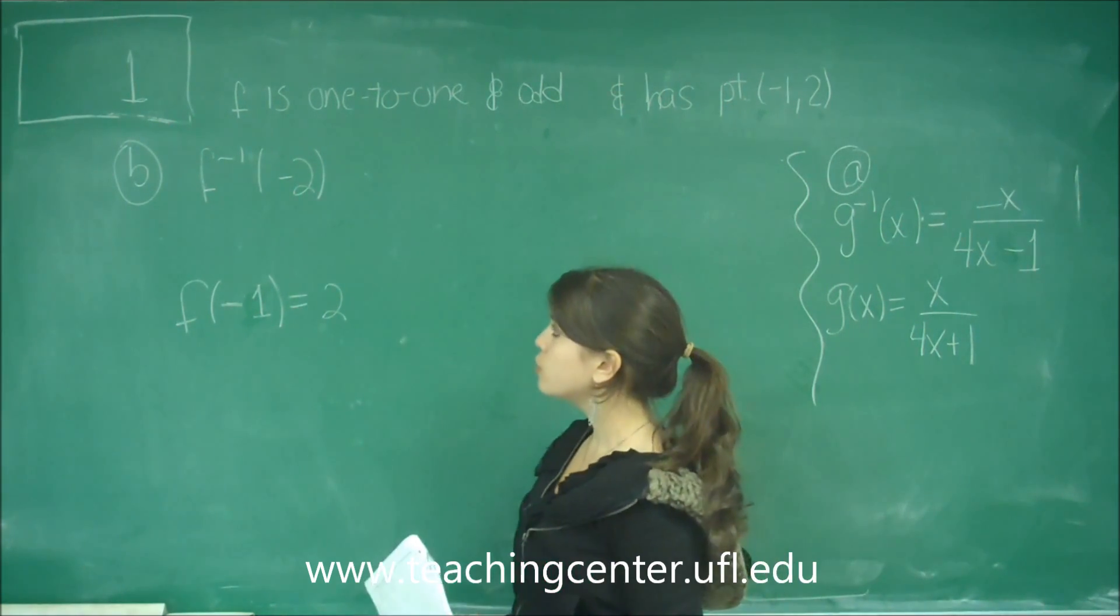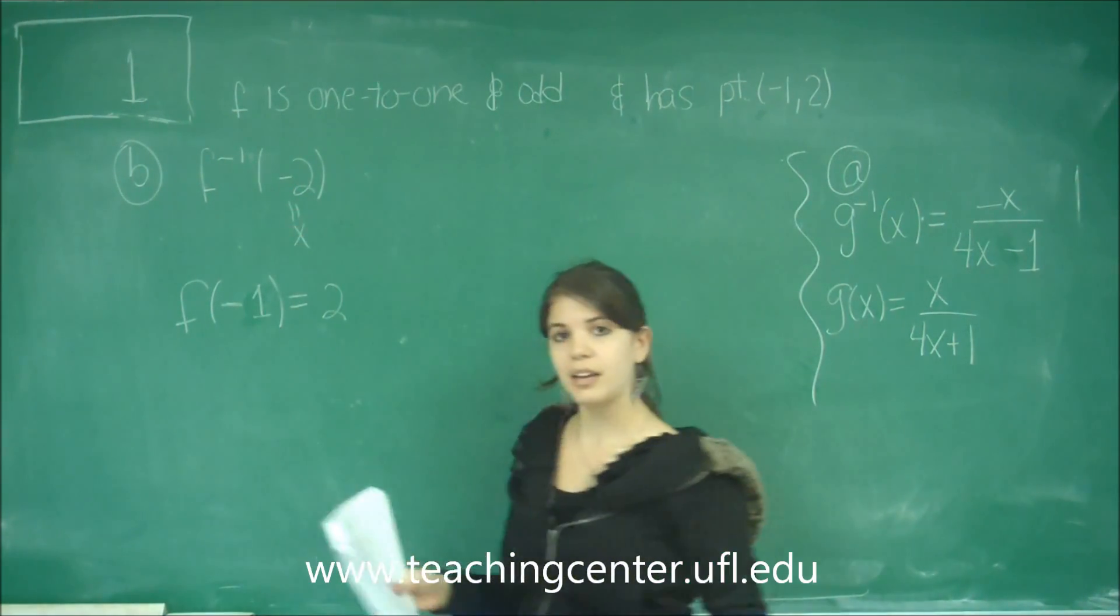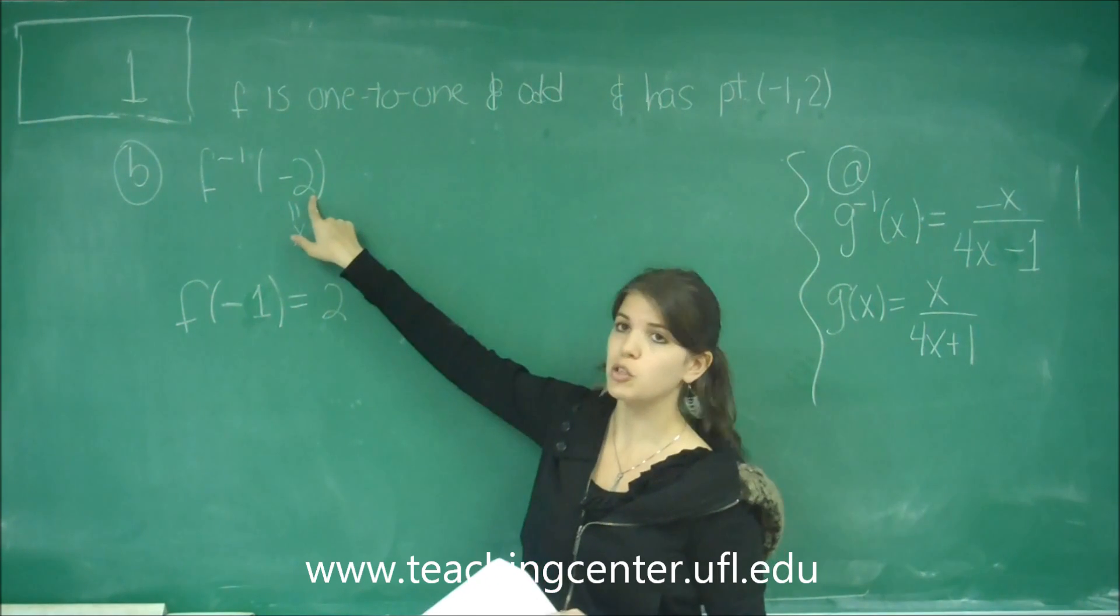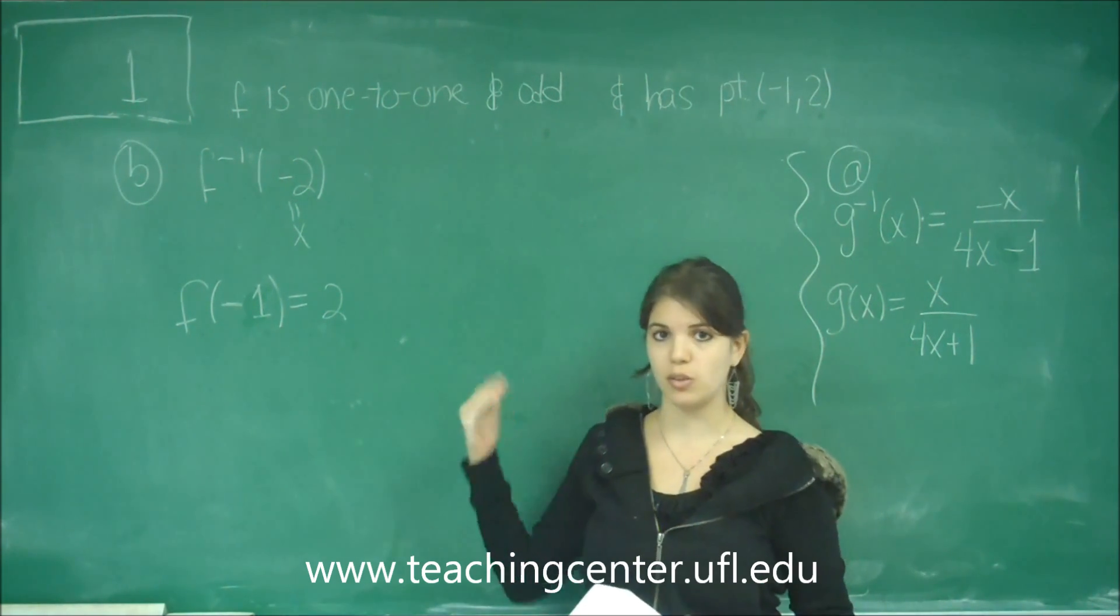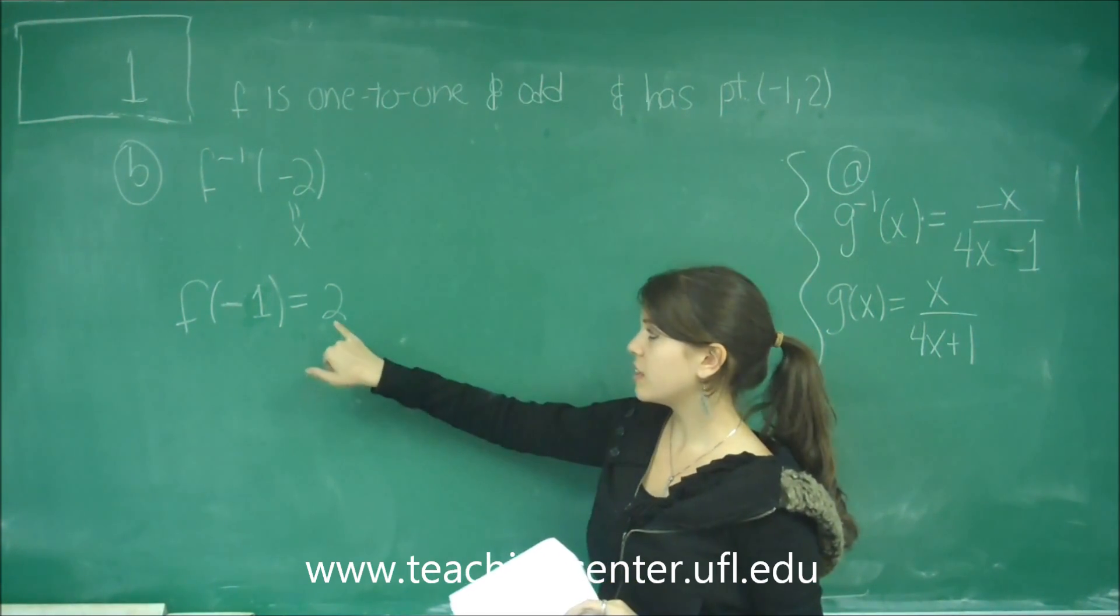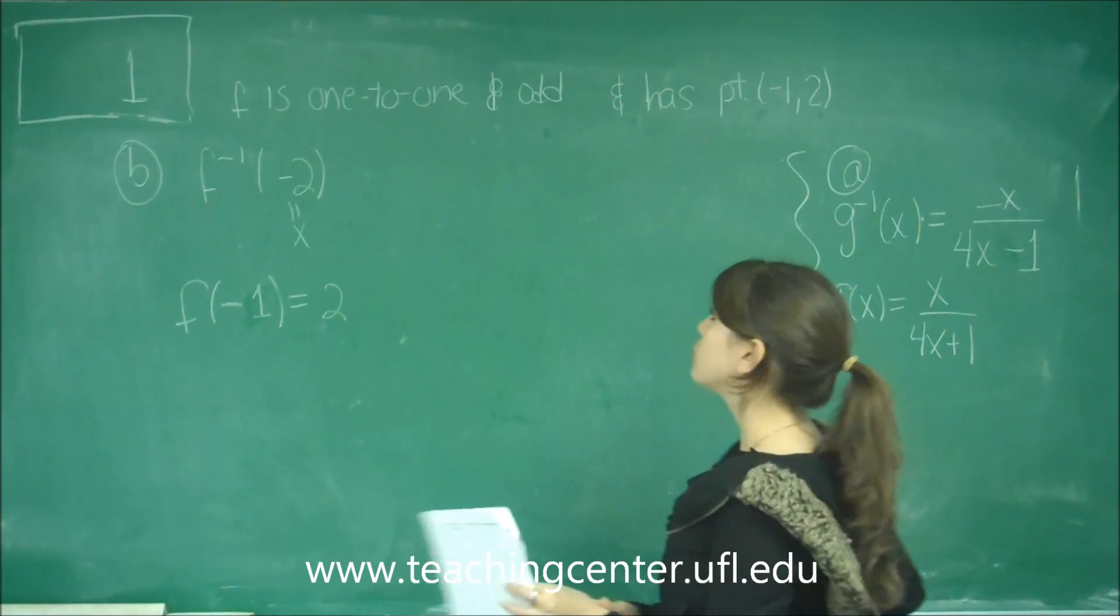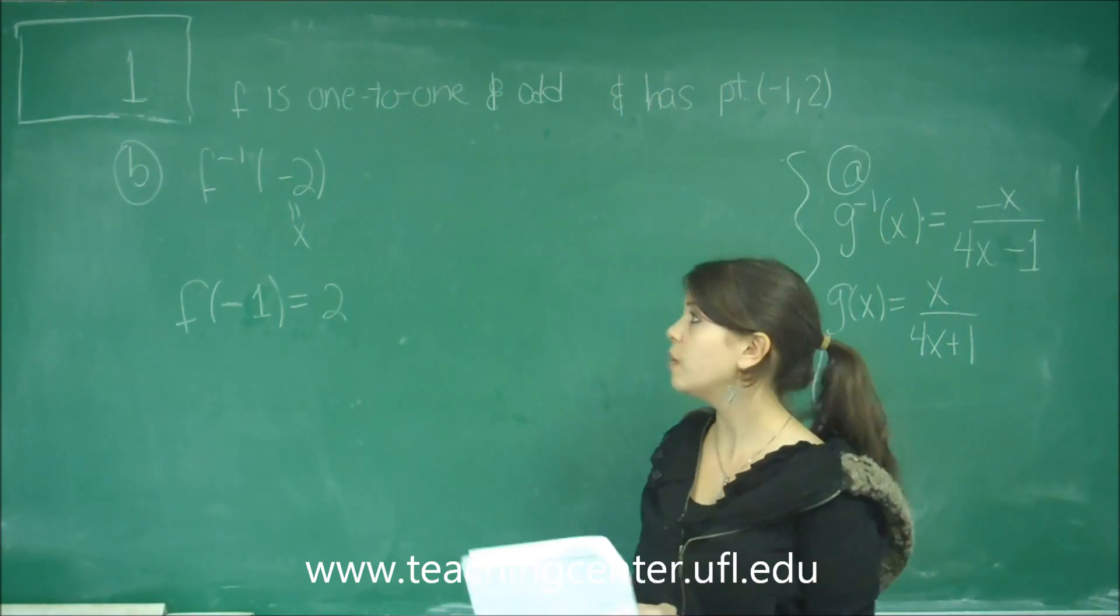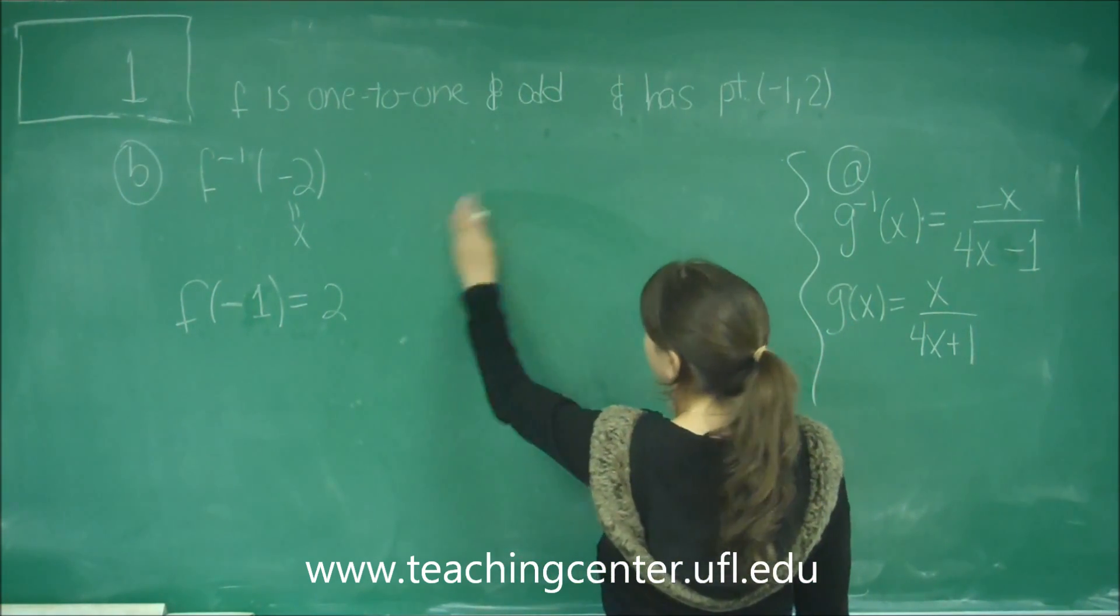So 2 is the y value and this is the x value. So to find the inverse of f for x equals negative 2, we need to look for the y for the original function that has -2 as the y instead of the x. Remember that the x of the inverse is the y of the original. The y of the inverse is the x of the original. So we have this point but unfortunately this is a positive 2, whereas we're looking for a -2. So we need to go back to the question and see if we're missing something. It says f is a 1 to 1 and odd function.